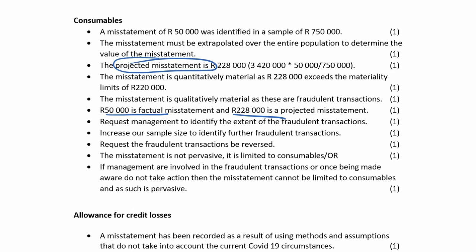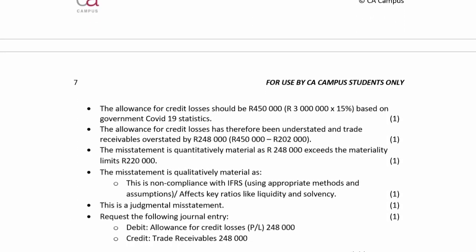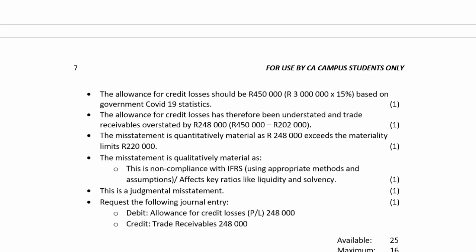The 228 is projected, so they might not adjust, but we can ask them to do further work or we can increase our sample size. They must however adjust the allowance for credit losses, which is factually misstated — prove that their methods and assumptions were not appropriate, then give the calculation for appropriateness and prove the misstatement.